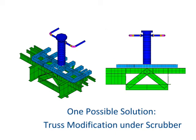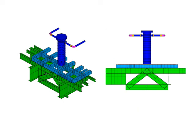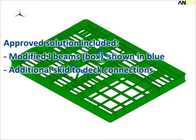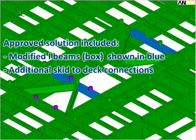Many other solutions were tested. The optimal solution for this specific case involved modifying the beams at these two locations, along with additional connections of the skid to the platform.